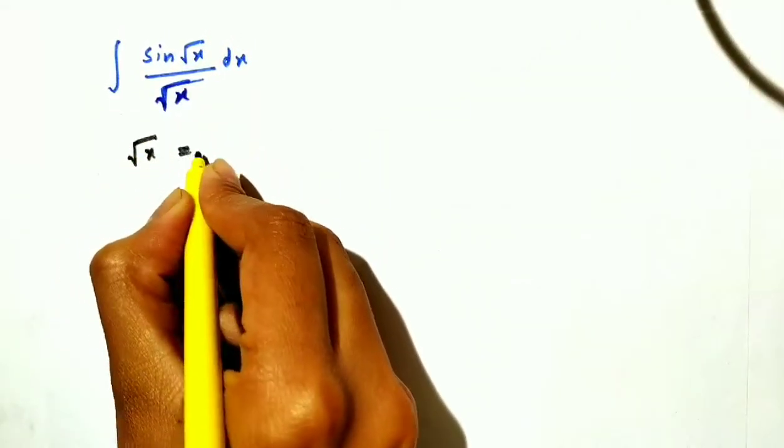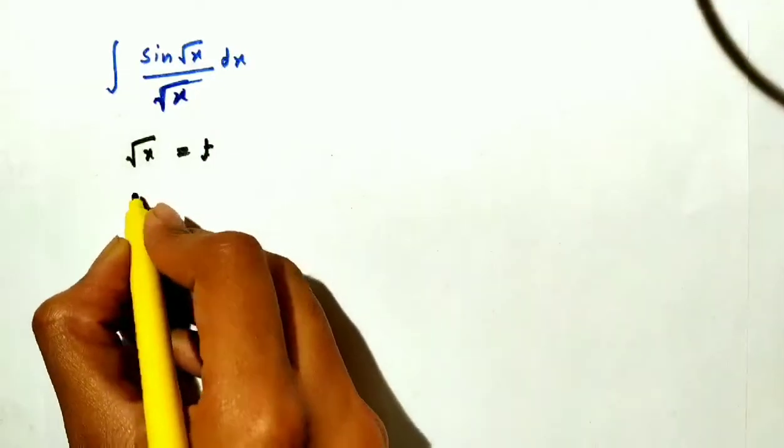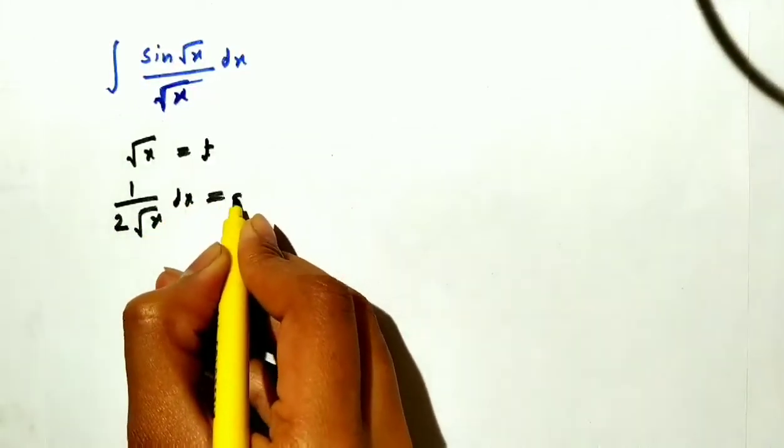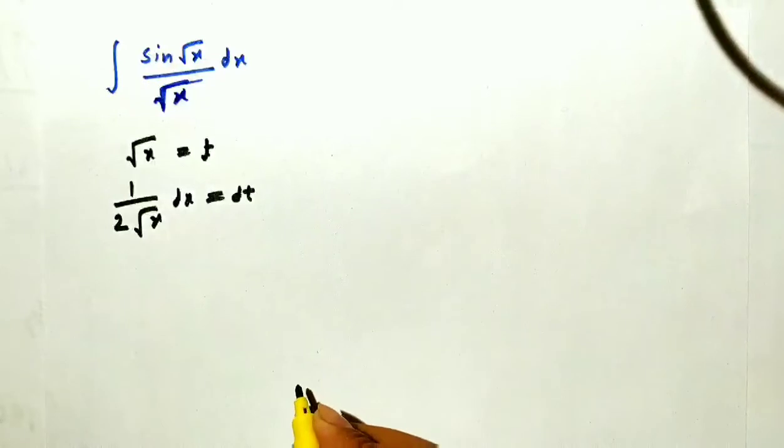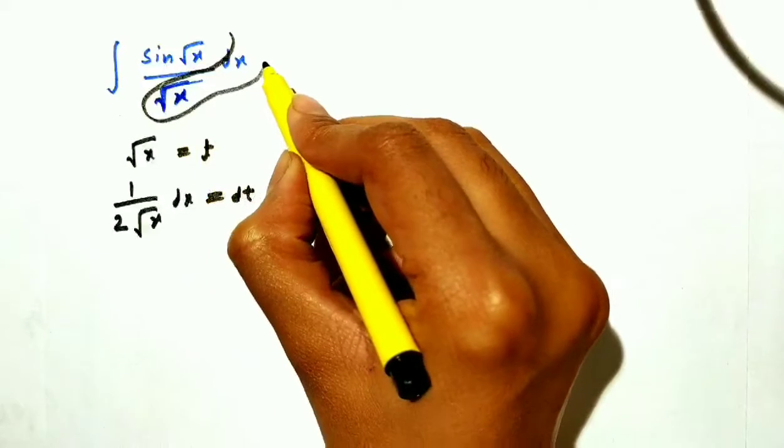√x as t. Now differentiate this, so you will find 1/(2√x) dx is equal to dt. Now look at here, this whole form we need to replace.